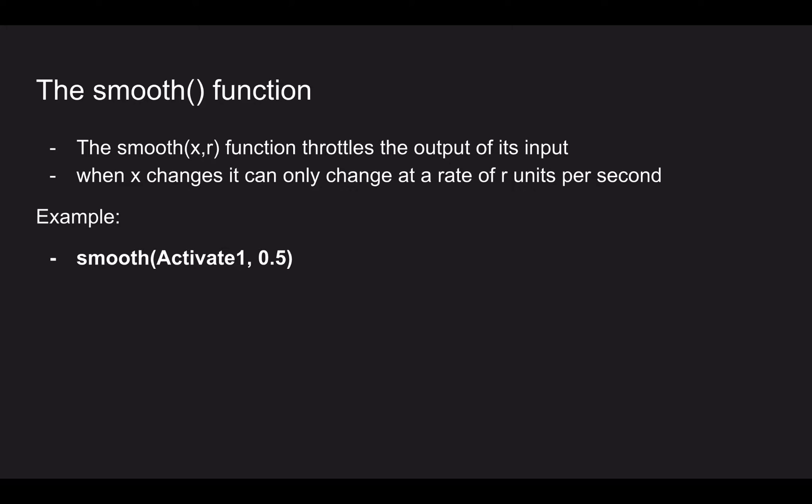The first function we want to look at is the smooth function. Out of the three functions used in this particular piece of code, I can say with confidence that the smooth function is one of the most important functions we have at all in Funky Trees. This function, typically denoted smooth(x, r), is a function that can throttle the output of an input. When x changes, it can only change at a maximum rate of r units per second.